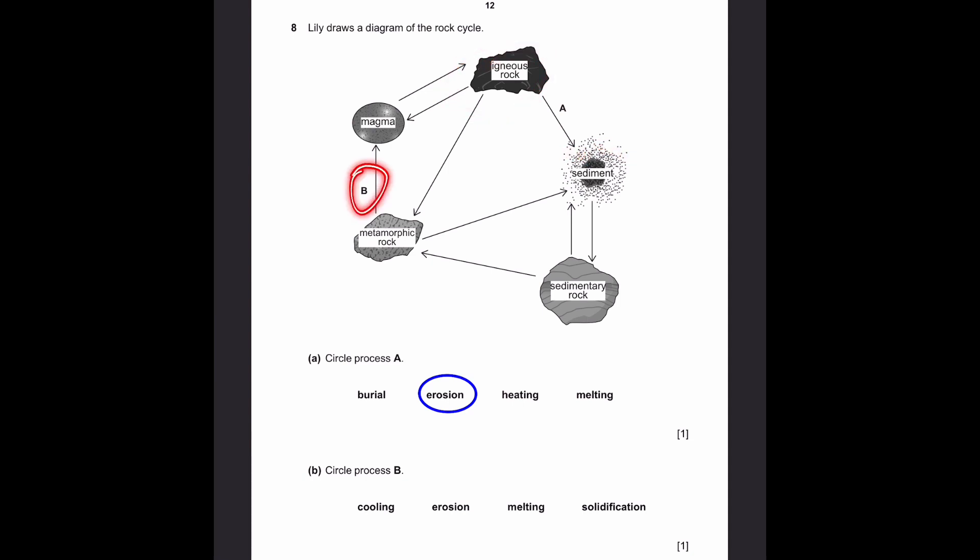Part B. Circle process B. This is the changing of metamorphic rock into magma. And that's simply melting. Because when we melt a rock, it turns into magma. That's quite straightforward. If you look at the other three options, it cannot be cooling, because cooling does not change the state. Erosion also does not change the size of the particle. And solidification, that's the opposite of what's happening here. In this case, the rock is becoming a liquid, not a solid. So the answer is melting.